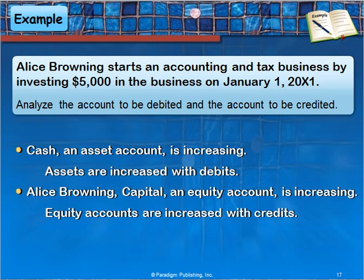Let's look at some examples. In this first one, Alice starts an accounting business by investing $5,000 in the business. When an owner invests $5,000 in the business, that's going to be an increase to the cash account — if you receive $5,000, that increases your cash. Assets are increased with debits, and cash is an asset account. We also have to look at our capital account, which is also being increased. It's an equity account, and equity accounts are increased with credits.